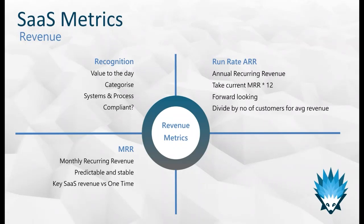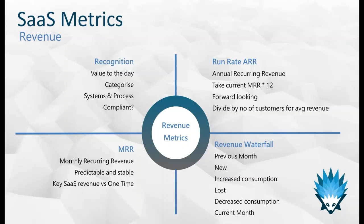Once we have recurring revenue sorted out, we then have run-rate Annual Recurring Revenue (ARR) — possibly the simplest calculation: just take MRR and multiply by 12. It's very good to do this as it shows the scale you're working on, and it's very forward-looking. It shows, say in month eight of your reporting cycle, where you are and where you're expecting to be in the next year. By doing this you can then divide your total recurring revenue by the number of customers to get an average revenue per customer.